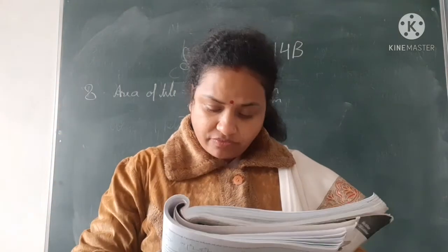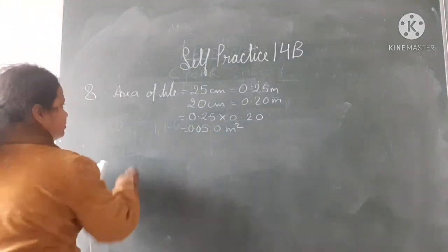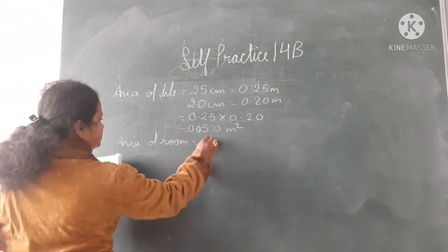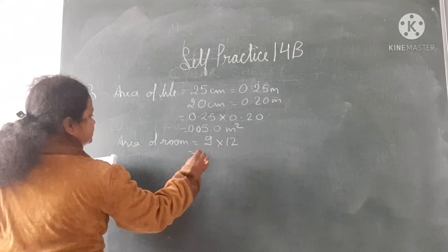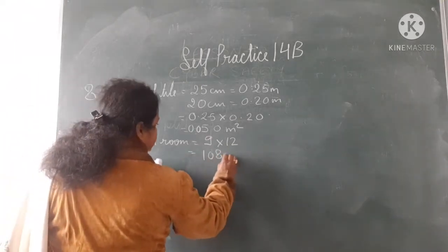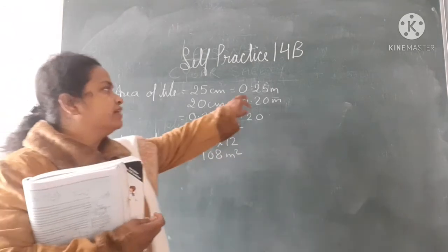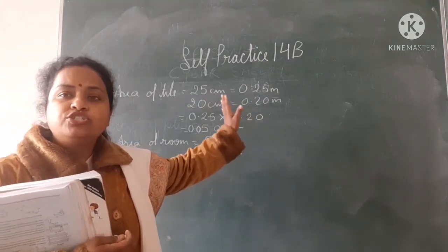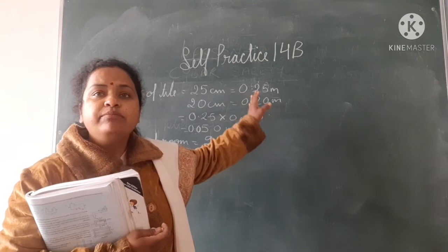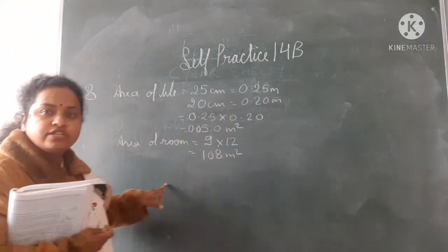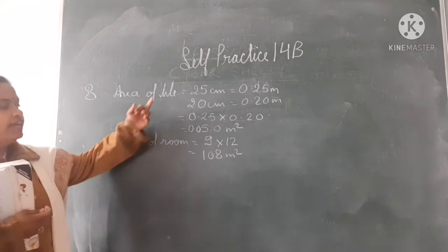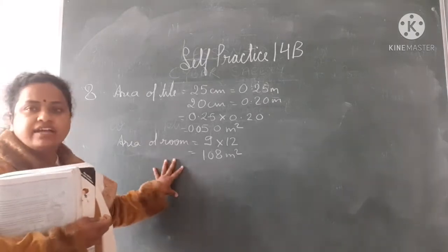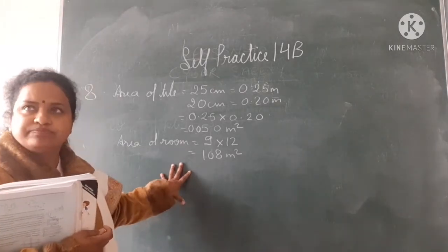Now area of room equals 9 into 12, that is 108 metre square. You must be thinking why I converted to metres — because whenever you are solving a problem, all the values should be in the same unit. Here both are in metres. If you take centimetres, use centimetres for both.